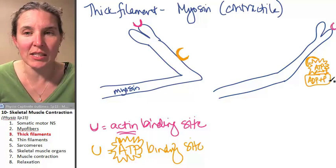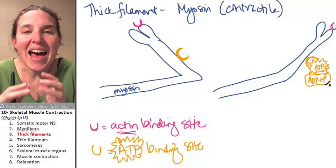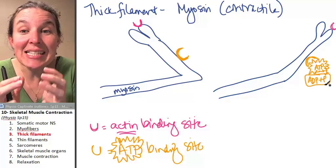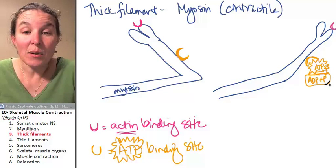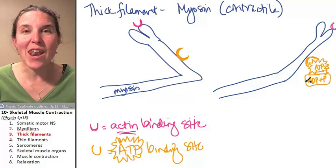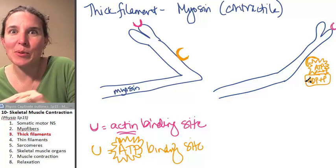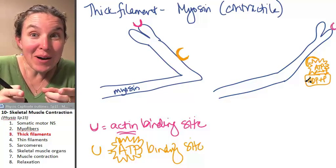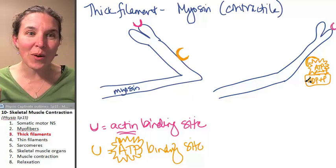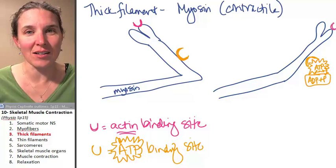Adenosine diphosphate plus this extra phosphate molecule, and that actually stays inside the binding site. And only if you have ADP plus P in that binding site, that's the only way you can have the myosin head cocked.